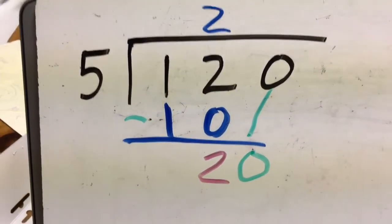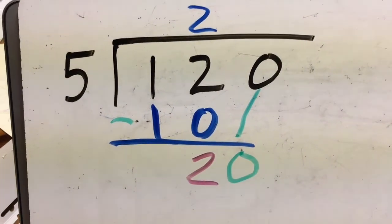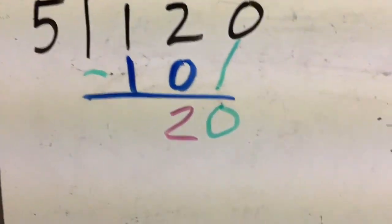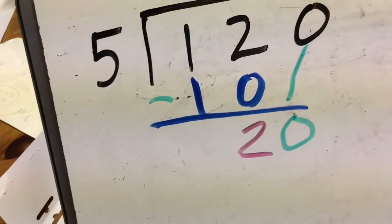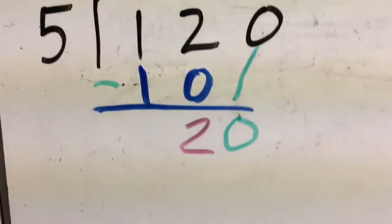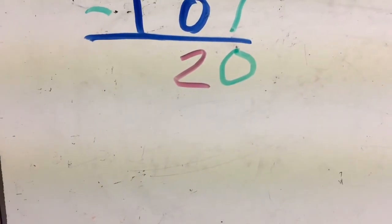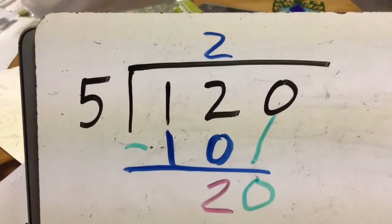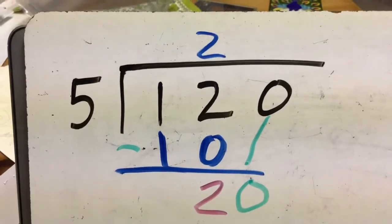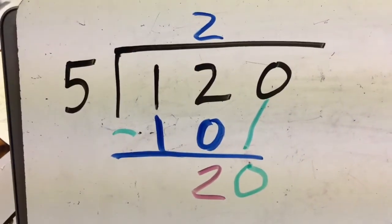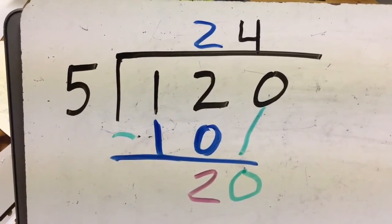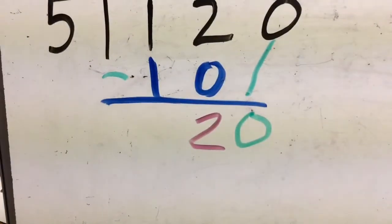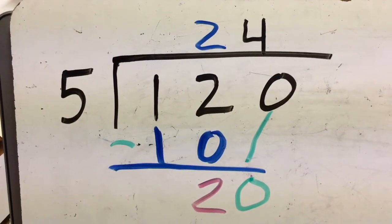My next question really isn't five into 120 anymore, because I took care of the one and two with the ten — two times five is ten. Now my question is: how many fives go into 20? Not the 120 anymore, but what's left, which is 20. So up here, what times five gets me 20? I know four times five gets me exactly 20, so I'm putting a four next to my two.